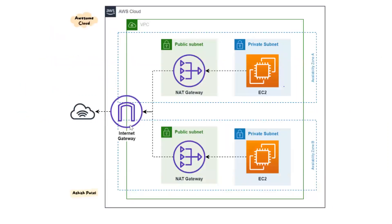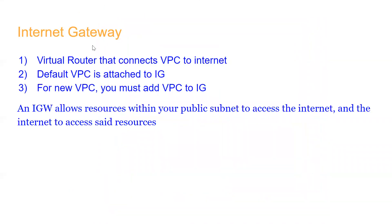Internet gateway is at the VPC level and helps all components communicate with the outside world - the internet. It's a virtual router that connects a VPC to the internet. The default VPC is attached to an internet gateway, which is why anything in the default VPC can communicate with the internet. When you create a new VPC, you have to attach it to an internet gateway yourself. Internet gateway allows resources within your public subnet to access the internet; private subnet resources cannot be accessed directly.